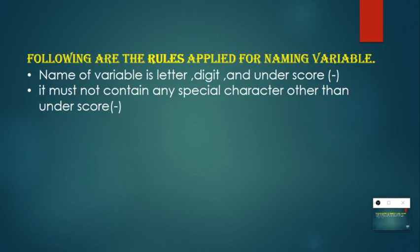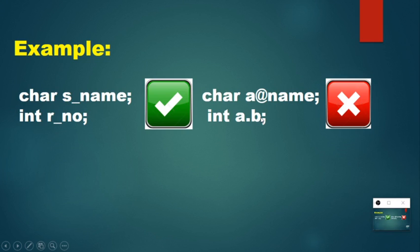The following are the rules applied for naming a variable. First, it should consist of letters, digits, and underscore, and it must not contain any special character other than underscore. For example, 'char s_name' will be accepted, but 'char a@name' will not be accepted. And 'int r_number' will be accepted, but 'a.b' will not be accepted. So other than underscore, no other special characters are accepted by the compiler.